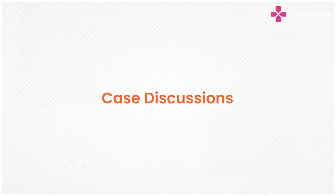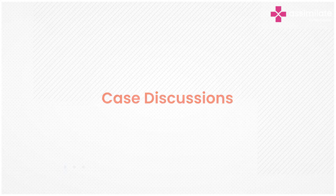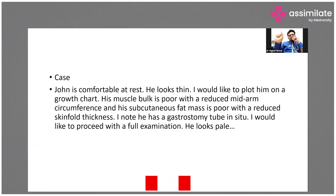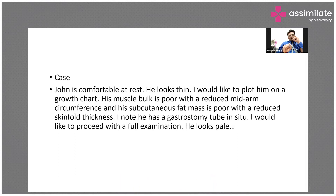Looking at the growth chart, John appears thin. He has poor muscle bulk, reduced mid-arm circumference, reduced subcutaneous fat, reduced skinfold thickness, and a gastrostomy. On full examination he looks pale, with poor muscle mass and a gastrostomy.